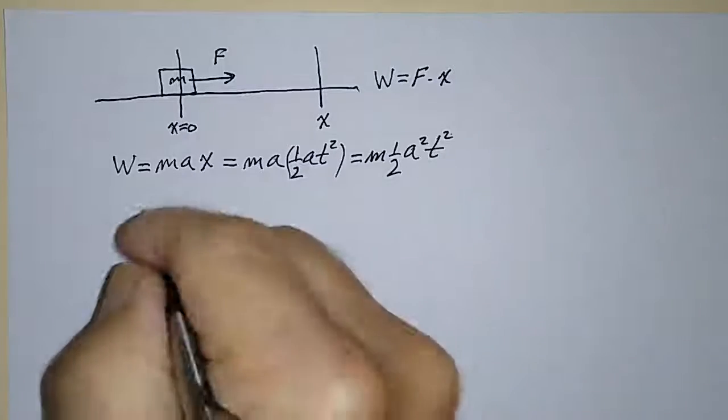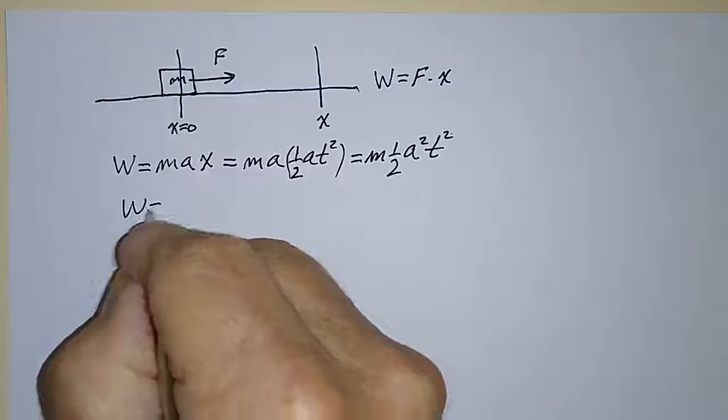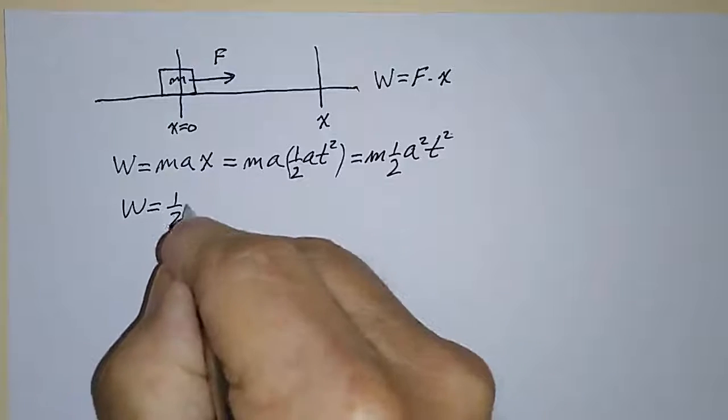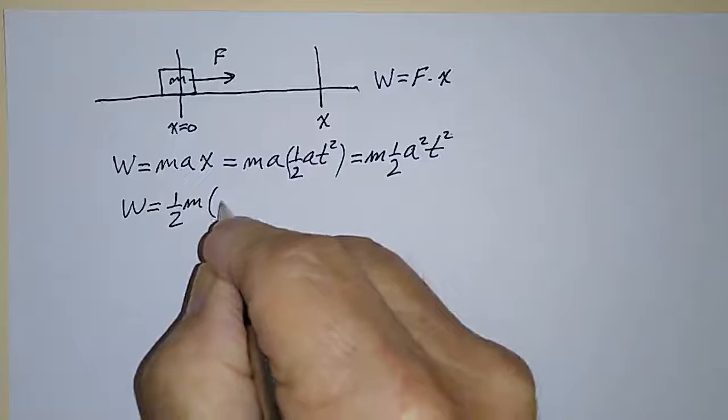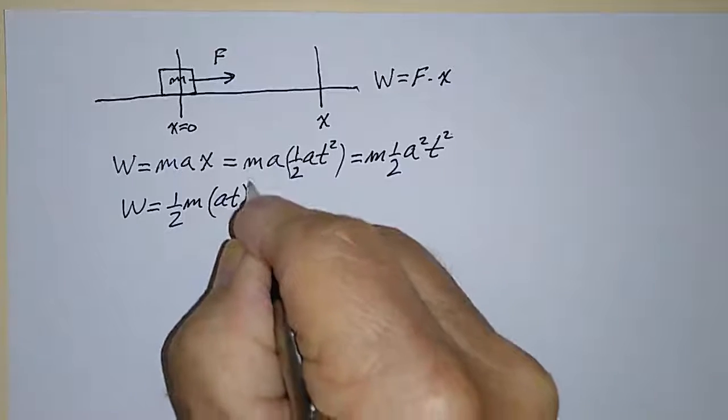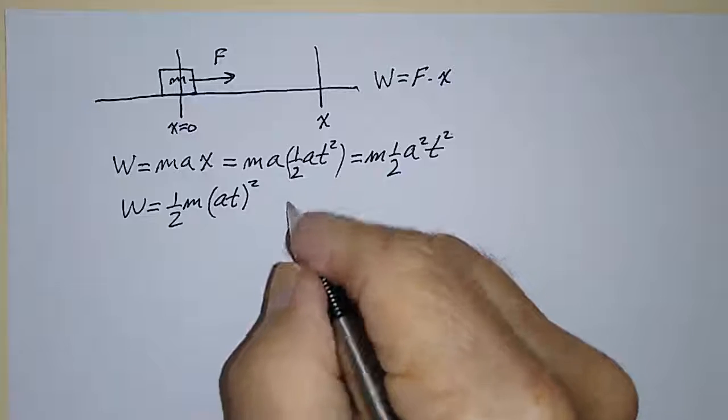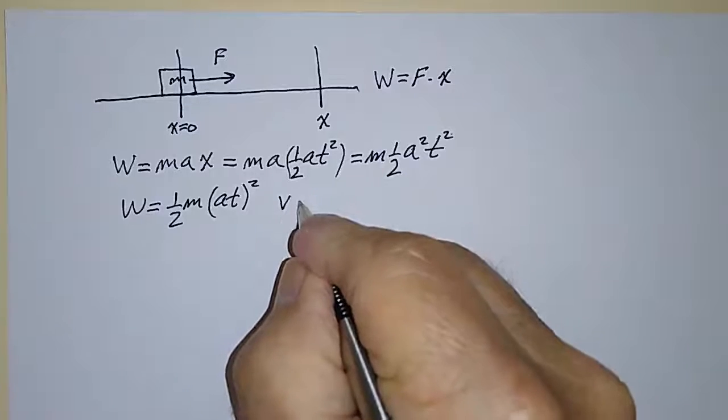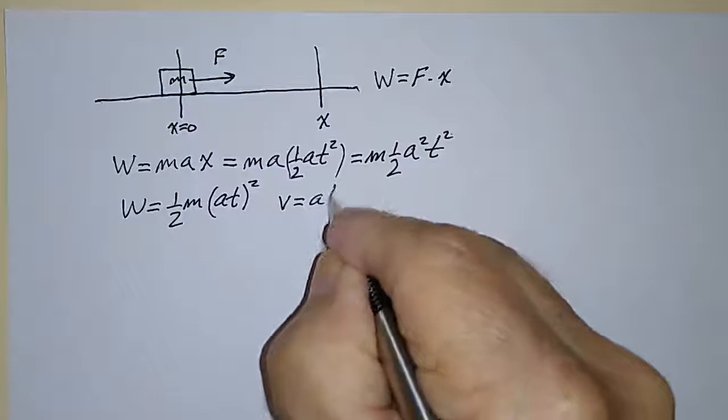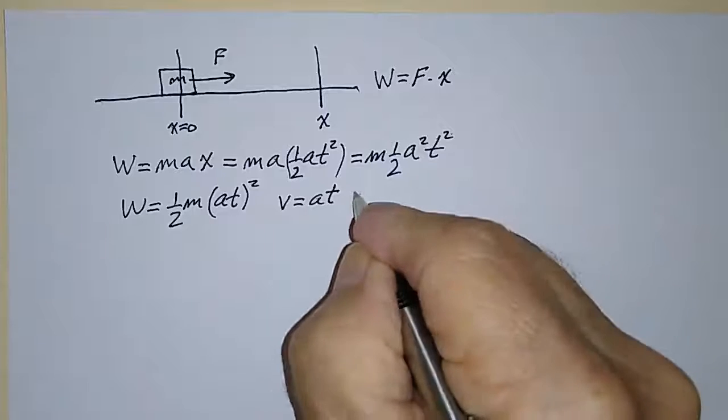And that's equal to one-half M times A T squared. But we also know that under constant acceleration, V is equal to A times T, so therefore